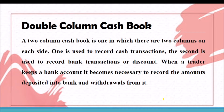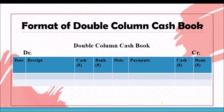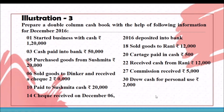Moving to the preparation of the double column cash book. Before that, we must remember the format — only a small change from single column: one additional bank column comes on both the debit and credit sides. We will learn the concept of double column cash book by preparing one problem. From this problem, we have to prepare the double column cash book. Let us begin with the first transaction: started business with cash of ₹20,000.